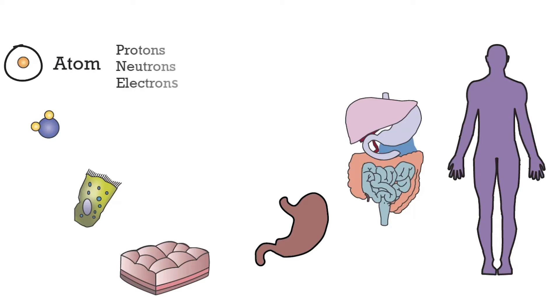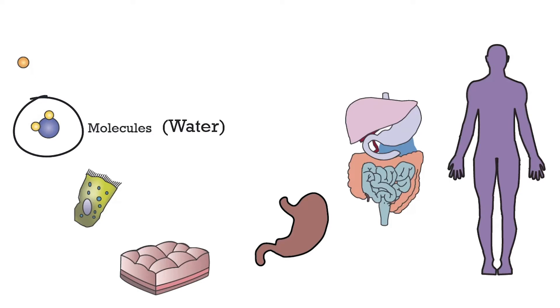Atoms comprise of even smaller components that contribute towards its overall charge or energy levels. Depending on those charges, atoms are considered reactive and can combine together in different combinations to form molecules. One notable example of an everyday molecule is water. Water is an element made up of two atoms of hydrogen and one element of oxygen. Hence, its commonly known name of H2O.